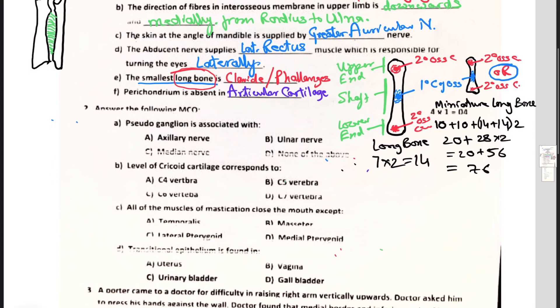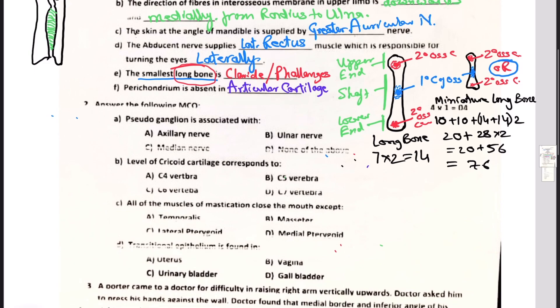Question number one is pseudo ganglion is associated with axillary nerve, ulnar nerve, median nerve, or none of the above. Among this, the answer is axillary nerve. So let me tell you that pseudo ganglion, to my knowledge, pseudo ganglion is found in three nerves. One is the nerve to teres minor which is a branch of axillary nerve.